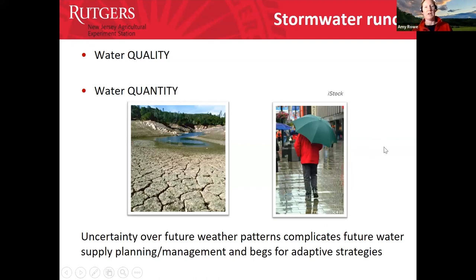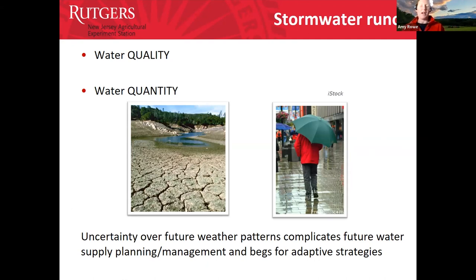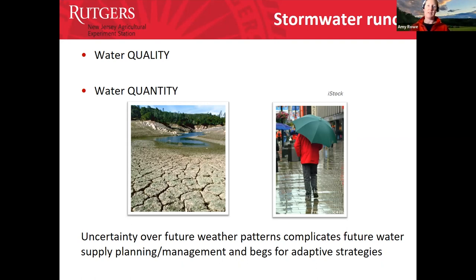Stormwater runoff is not just a water quantity issue but also a water quality issue. These are the reasons why we need to manage stormwater, especially on our agricultural properties — and this is even more of a concern given climate change.